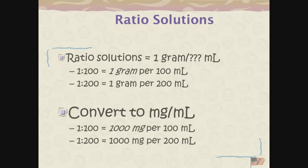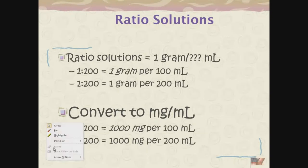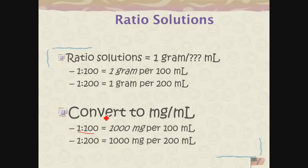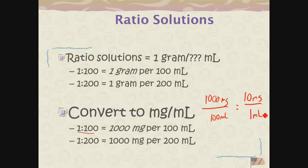So if I say I have a 1 to 100, that means I have 1 gram in 100 milliliters. 1 to 200 is 1 gram in 200 milliliters, and from there we can do the conversion to get to the desired amount. So if I have a 1 to 100, that means 1 gram in 100 milliliters, or 1,000 milligrams in 100 milliliters, or 10 milligrams in 1 milliliter. It's basically reducing as we go. From there, we can plug it into our weight-volume formula. All we're doing is using a ratio as opposed to a percent.